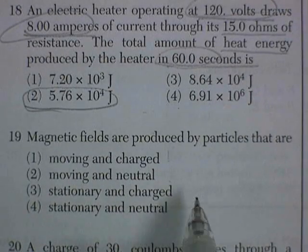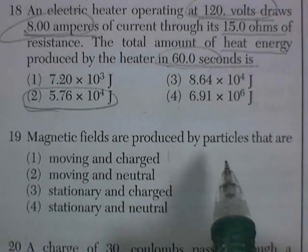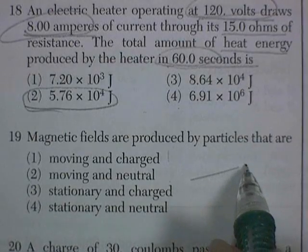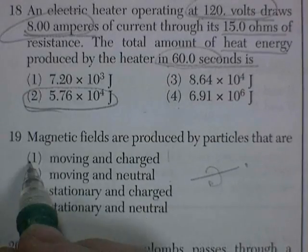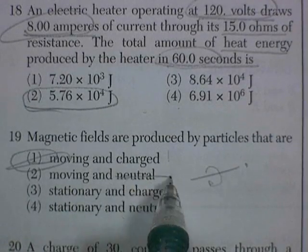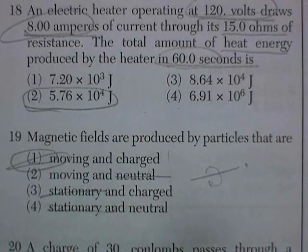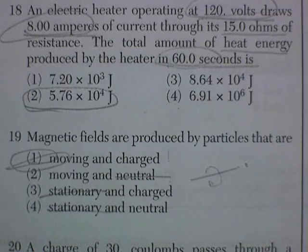Magnetic fields are produced by charged particles moving. A magnetic field produces a magnetic field around it. So moving and charged. That's it. Neutral wouldn't do it. Stationary wouldn't do it. You get electricity around a wire when you've got a current flowing through it.